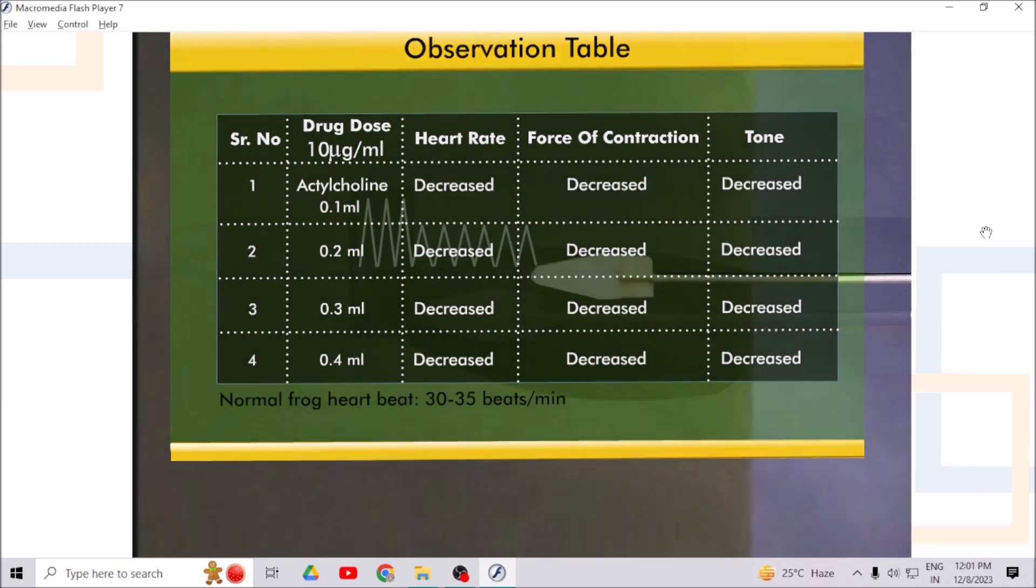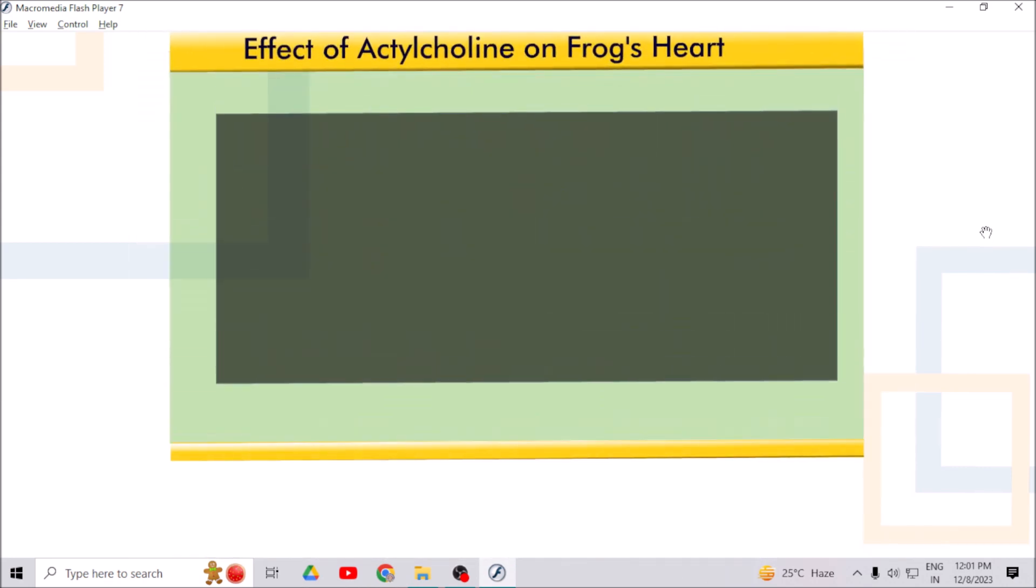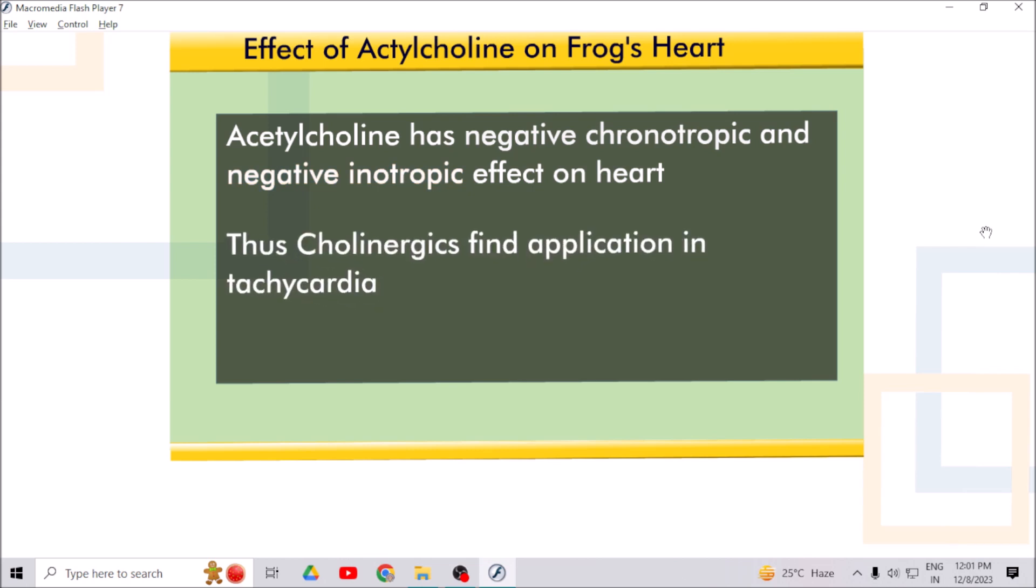From these observations we can say that acetylcholine has negative chronotropic and negative inotropic effect on heart. Thus, cholinergics find application in tachycardia.